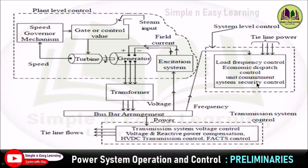Digital computers are used to detect abnormalities and alarm the human operator with the help of a buzzer, lights, or CRT displays. If there is no indication in the monitoring devices, then the system is working in normal condition. In case of abnormalities, the engineer should take a proper decision in a short duration to make the system normal. If the engineer fails to take a decision, the total system collapses.